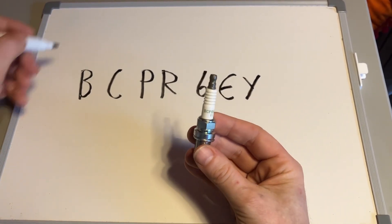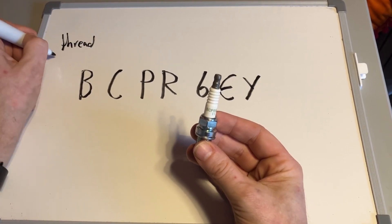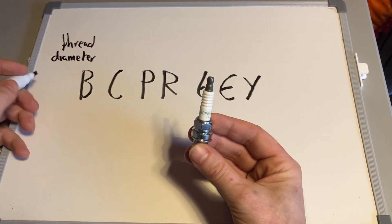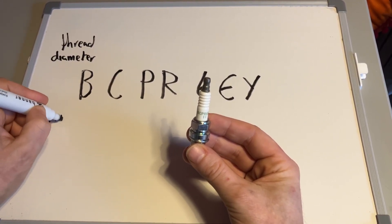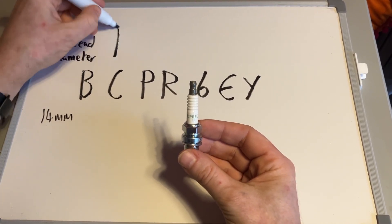B, the first letter, is the thread diameter. Obviously we get different sizes. In this particular instance, 40 millimeters thread diameter. The C is to do with the construction.